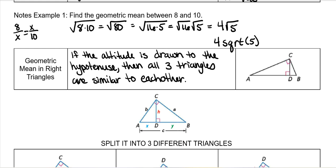Whenever that happens, it creates three different triangles: the main big triangle, then the triangle on the left-hand side, and then the one on the right-hand side. So it has three separate right triangles, and they are all three similar to each other.